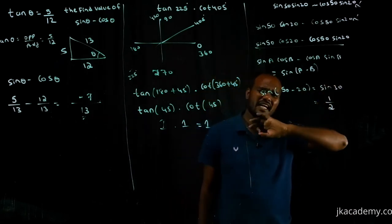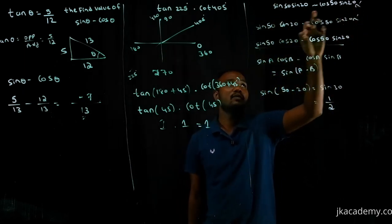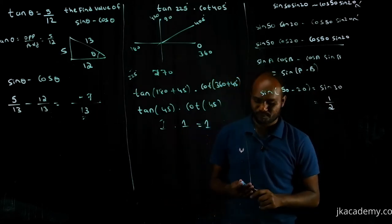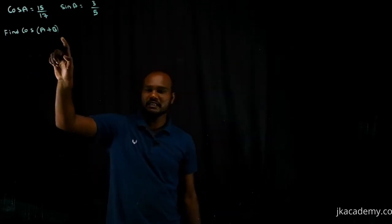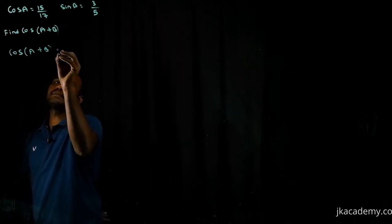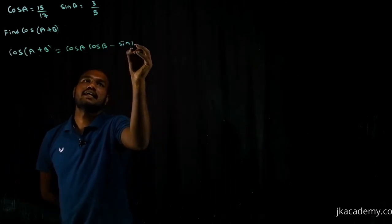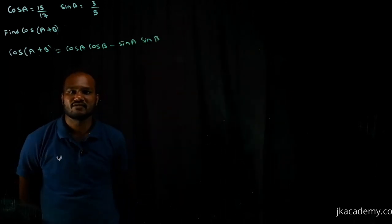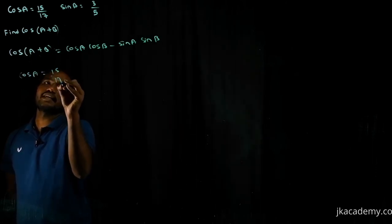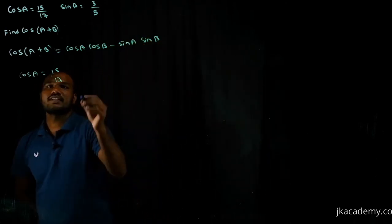Please check our earlier 40-minute video on this topic — by the end of that video you'll be capable of solving these easily. Now, the next question asks us to find cos(a + b). We know the formula: cos(a + b) = cos a · cos b − sin a · sin b. Here cos a is given but cos b and sin a are not directly given, so we need to find them.